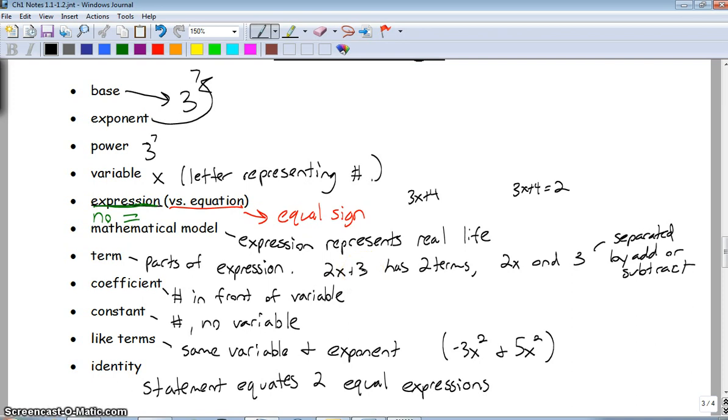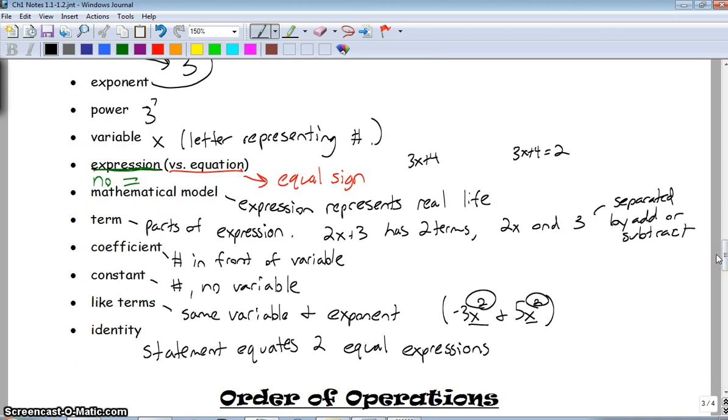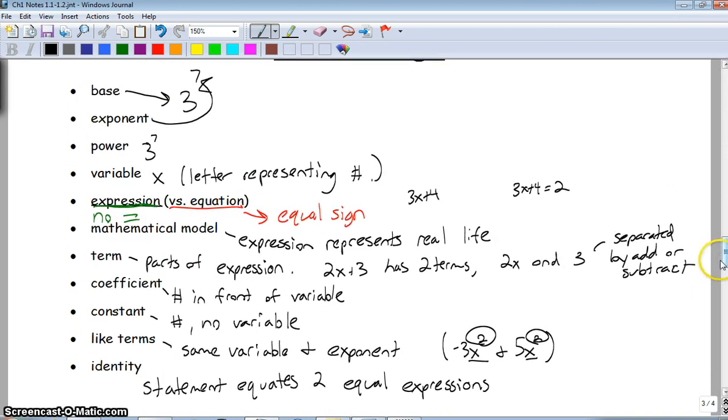And like terms, they have the same variable and exponent, but they could have different coefficients in front. So these two things here would be the like terms. We can add and subtract them together because they have the same variable and same exponent. They're both squared. And finally, we can talk about an identity. It's a statement that equates two equal expressions. So we'll be doing more identities and proofs with that later, but that's what an identity is. So again, I'll keep this up here. If you need to keep writing, just pause it and finish up the screen.